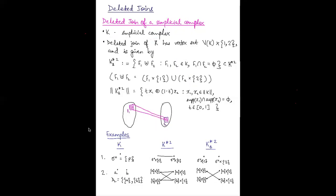If K is a simplicial complex, its deleted join is defined by taking two copies of K and joining all pairs of simplices F1 and F2 that do not intersect — denoted F1 ∪⁺ F2 with F1 and F2 disjoint. Here are examples illustrating how the deleted join differs from the usual join: if you have a singleton set sigma_0, its usual join would consist of a line segment with two endpoints, but in the deleted join you just have the endpoints. For a two-point set, its join with itself consists of four line segments, but its deleted join has only two line segments because you've deleted those joining each simplex with itself.